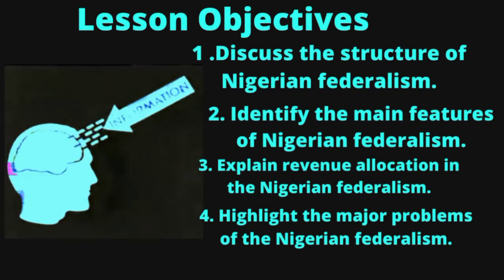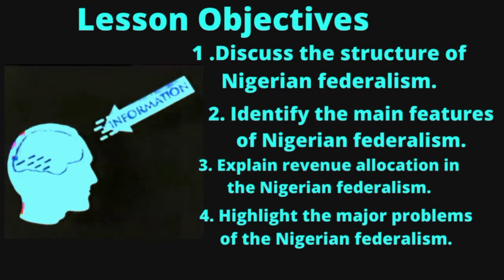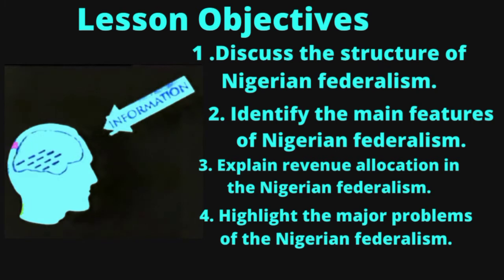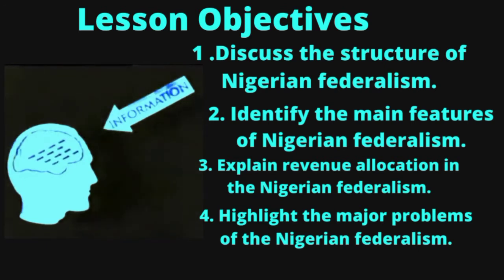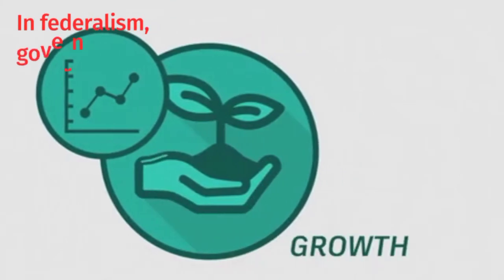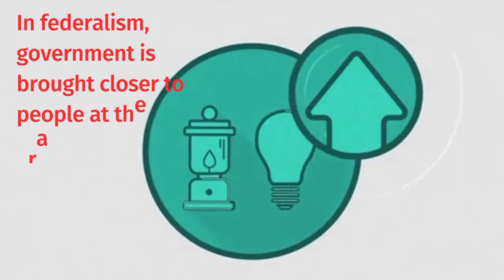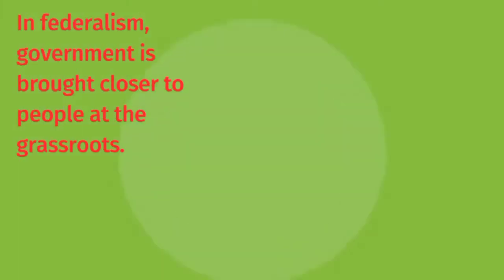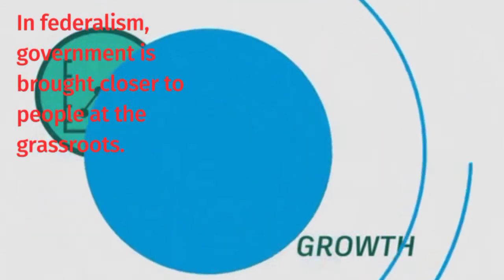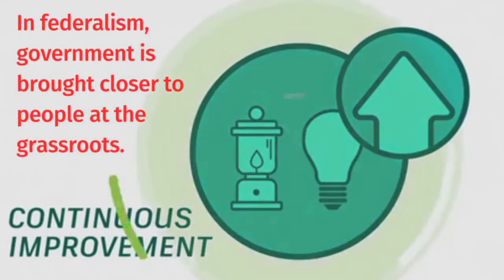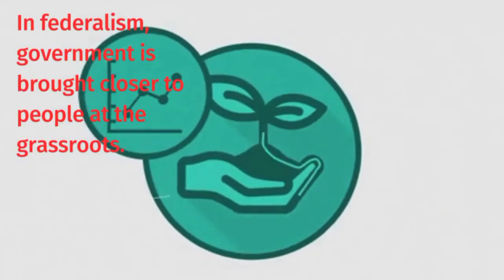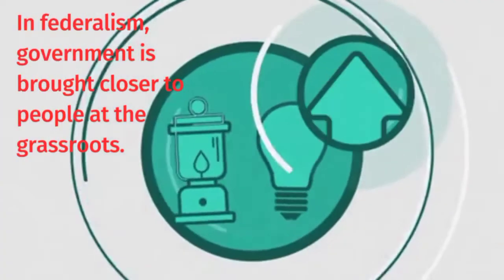First of all, take note of the learning objectives. By the end of this topic you should be able to discuss the structure of Nigerian federalism, identify the main features, explain revenue allocation in Nigerian federalism, and highlight the major problems of Nigerian federalism. Bear in mind that the essence of federalism is for government to be brought closer to the people at the grassroots, to ensure development, especially when the country is too big.